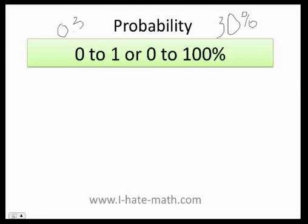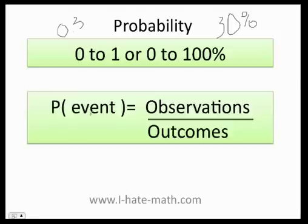Also, how do we define probability? The probability of an event equals the number of observations divided by the outcomes. We're going to do a lot of examples, so don't worry if you don't understand it now because I promise you it's very easy.